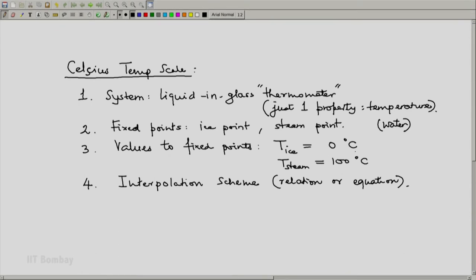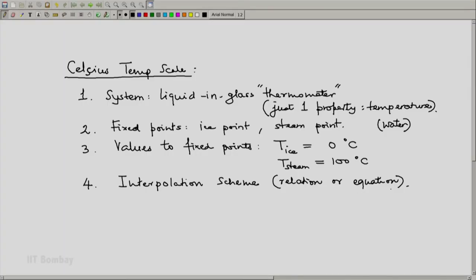Third, the values given to the fixed points for the Celsius scale give the values of 0°C and 100°C. So between these two limits, if you interpolate, the temperature will turn out to be on the Celsius scale. And again, an interpolation scheme — we assume that the temperature be represented as a linear scale or a linear function of the mercury thread or the liquid thread length in the capillary.